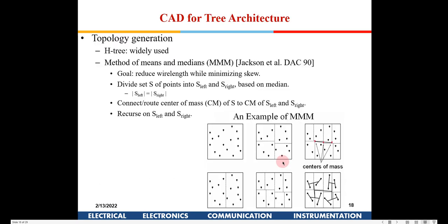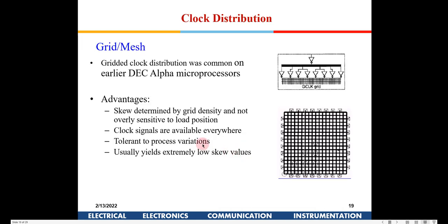The topics covered today are based on research and experience working on communication systems, VCOs, and related areas. These topics are not available in one single book but are available across different books. The algorithm for H-tree generation has been covered, and now the next kind of clock distribution system is a grid.